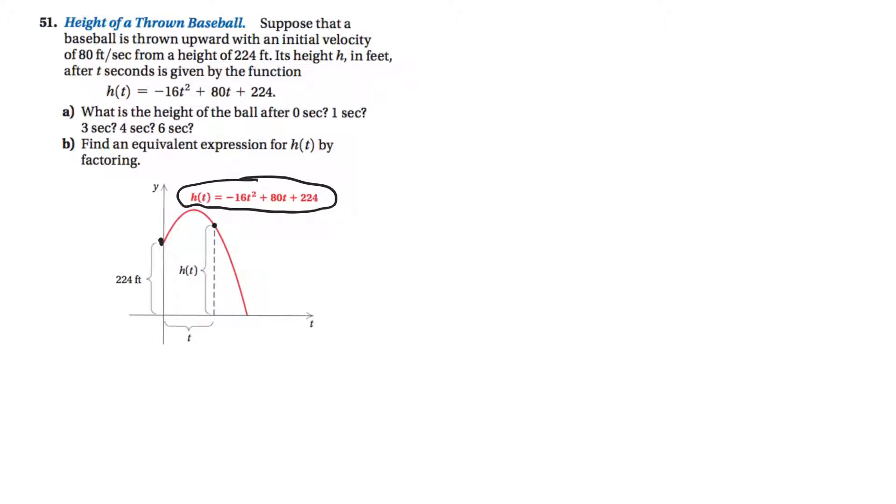And so if I want to know where the ball is, how high it is at any point, that's what this height is, all I have to do is put in a time. Like, how high is the ball after five seconds? How high is the ball after something else? So here's some of the questions they ask you. So here's our function, h of t, negative 16t squared plus 80t plus 224.